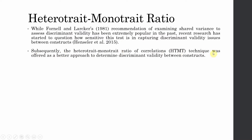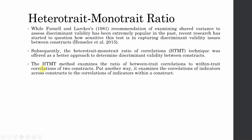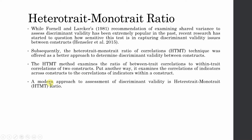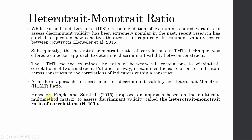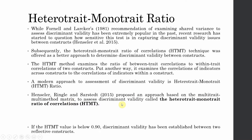Subsequently, the heterotrait-monotrait ratio of correlation technique was offered as a better approach to determine discriminant validity between constructs. The HTMT method examines the ratio between trait correlations and within-trait correlations of the two constructs. Put another way, it examines the correlation of indicators across constructs relative to the correlation of indicators within the construct. Within the construct is your monotrait; across the construct is your heterotrait. Henseler and others proposed this approach based on multi-trait multi-method metrics.